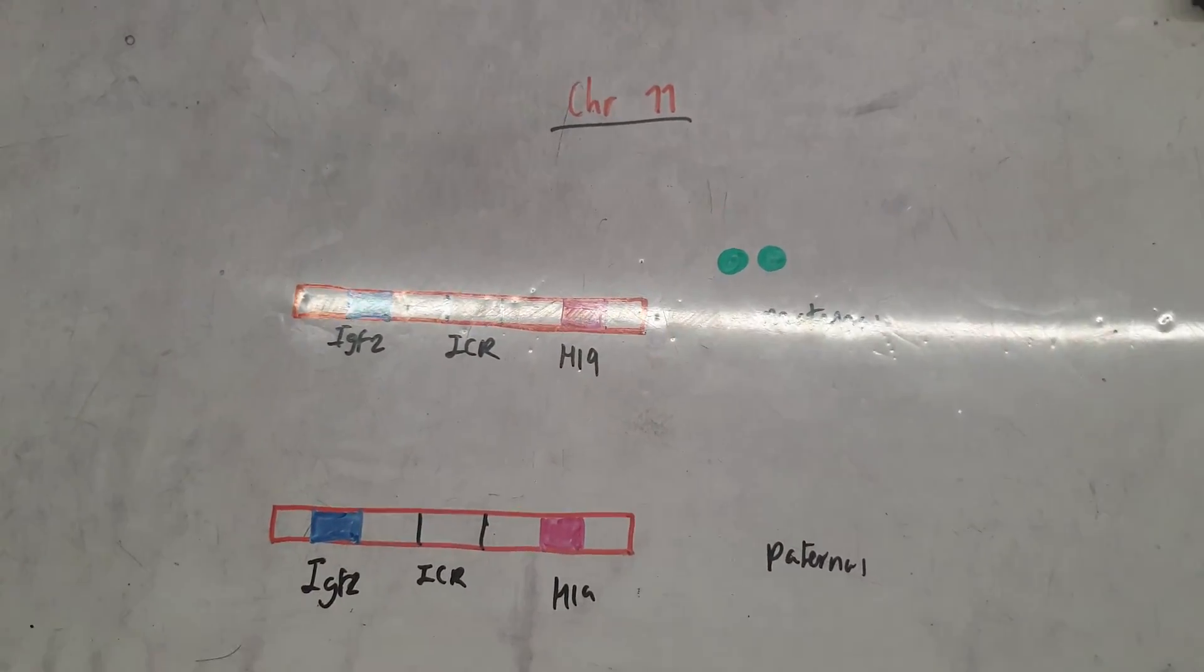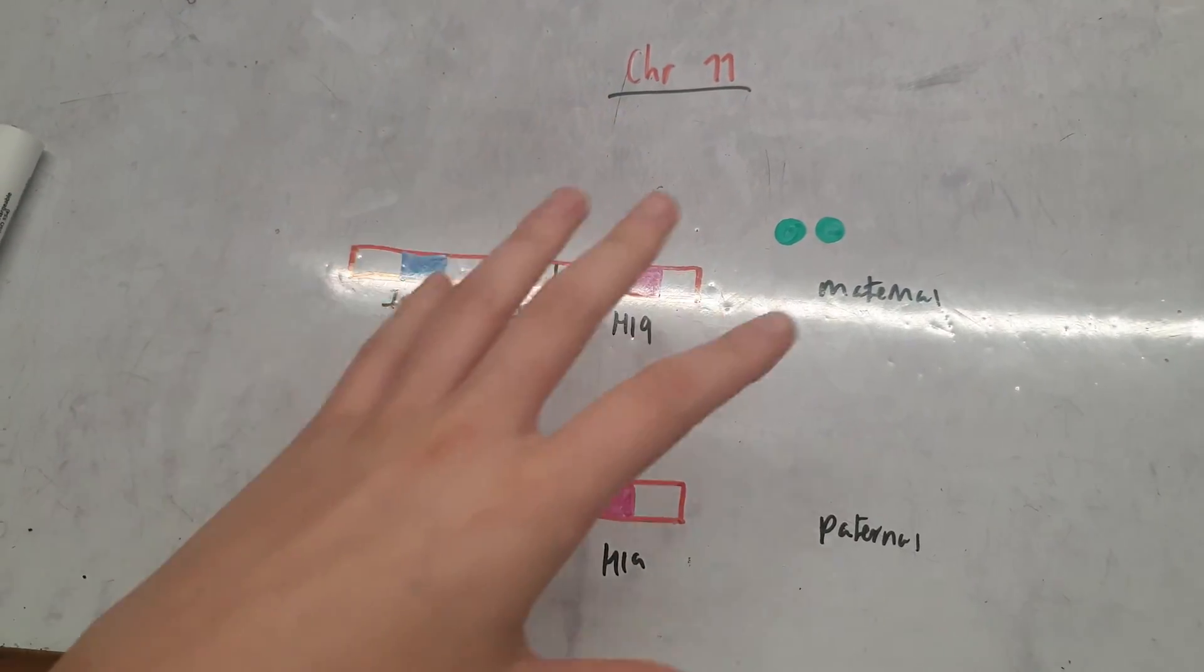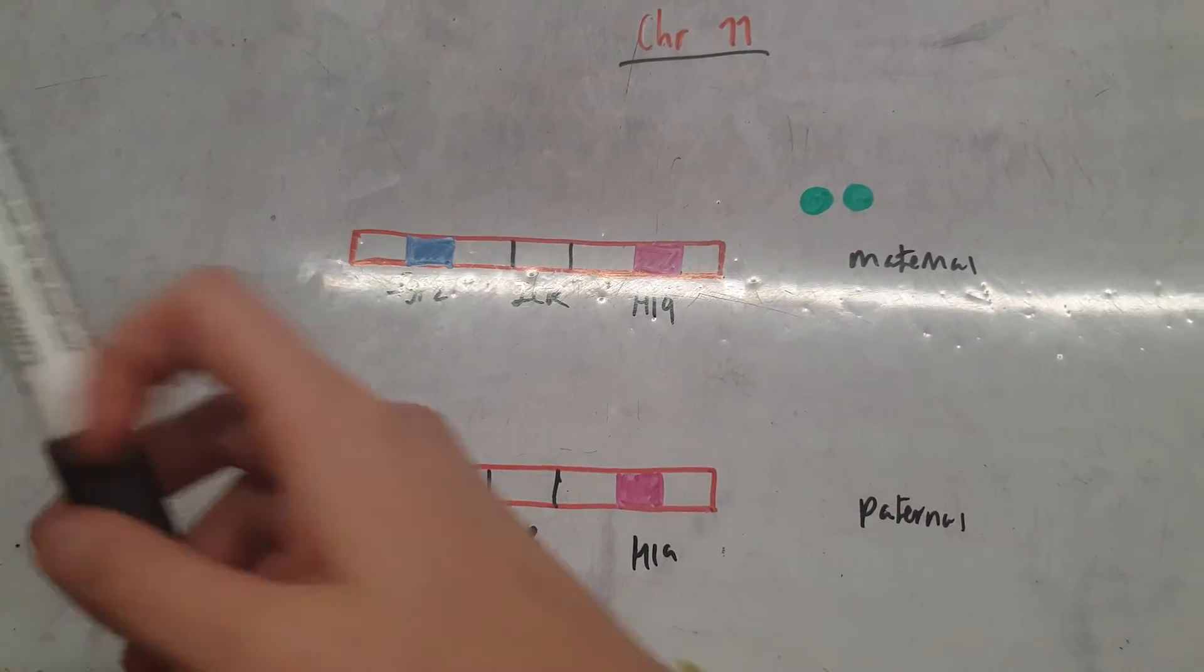I'm going to briefly discuss the imprinting that occurs at chromosome 11, and at the end I'll mention what can happen when imprinting goes wrong with one of these genes.